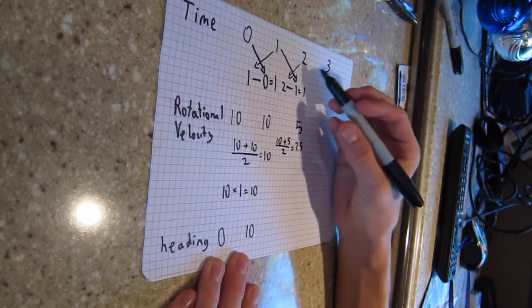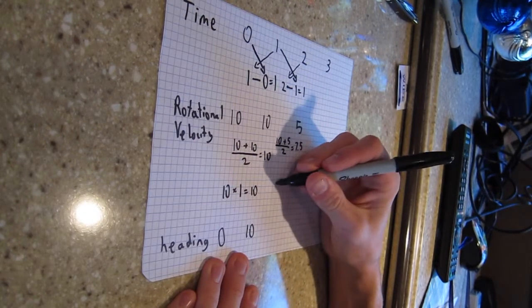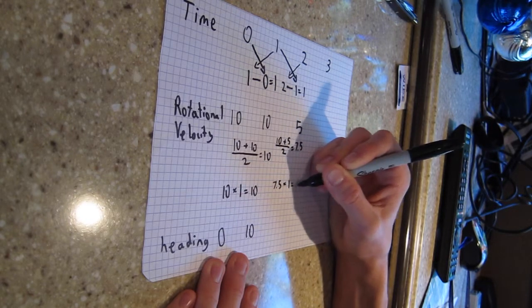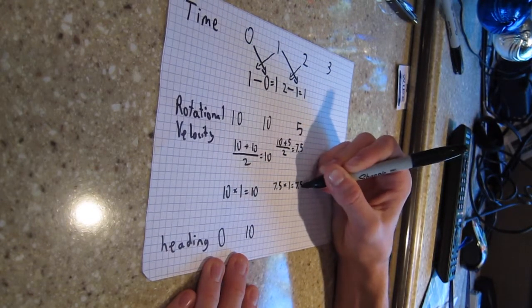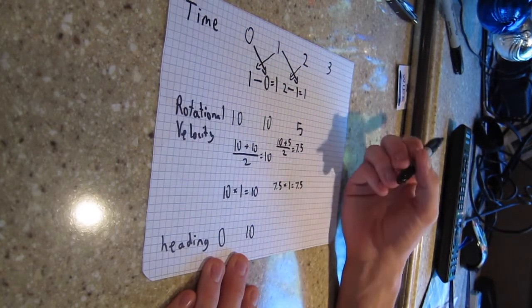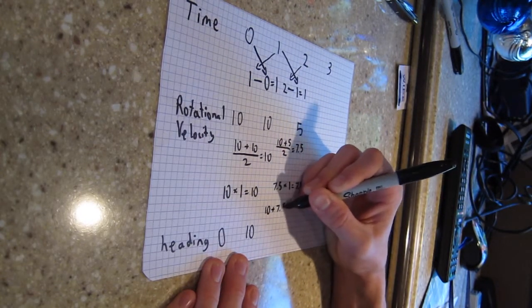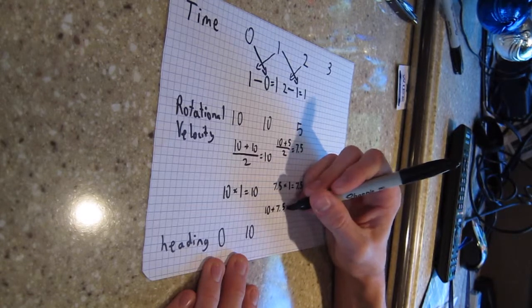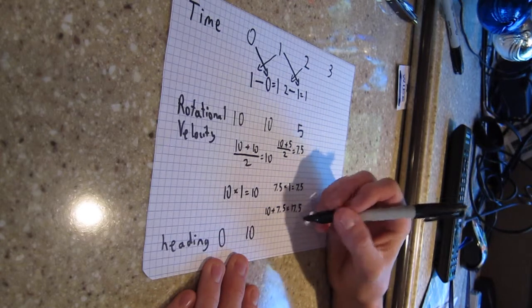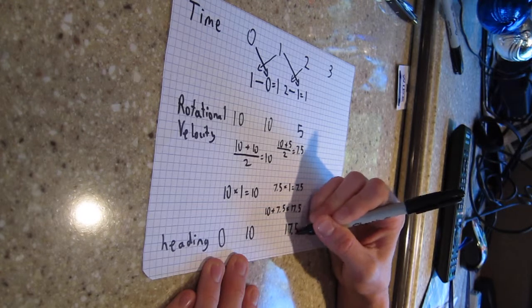And then we'll take our average rotational velocity times our time. 7.5 times 1 is equal to 7.5. And then we will add that to our previous heading. So 10 plus 7.5 is equal to 17.5. And then so we'll have at 2 seconds a heading of 17.5.